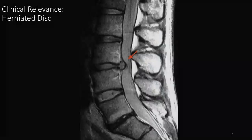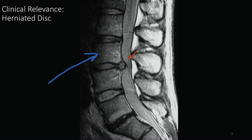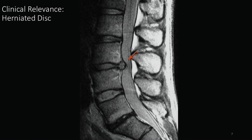Looking at an MRI image, we can see the vertebral bodies and the spinal cord passing through the vertebral foramen. What we're seeing here is a herniation of one of the intervertebral discs — you can see how it's bulging out from the typical space between two bodies and impinging on the spinal cord. This can have major clinical significance: it can cause loss of function to muscles and major issues for an individual's quality of life.